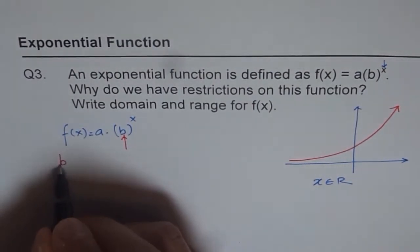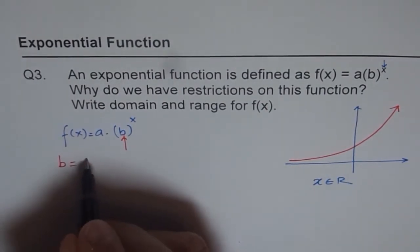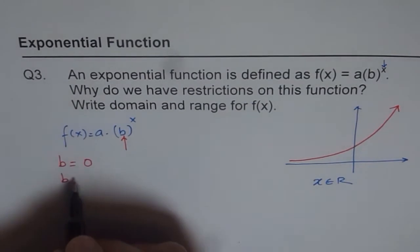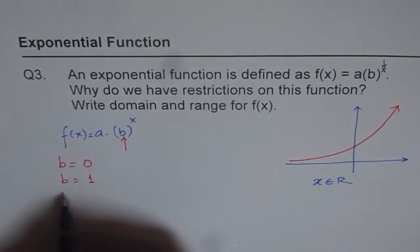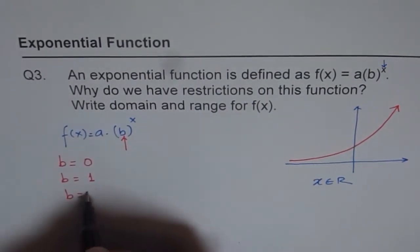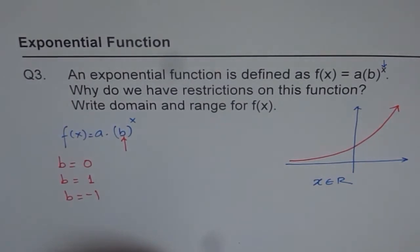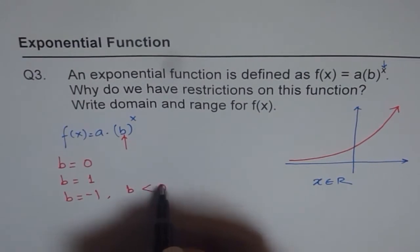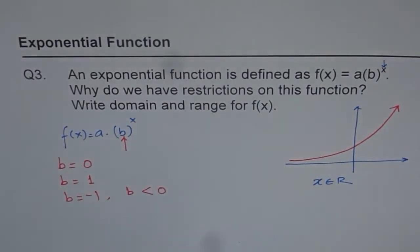If you take b as equal to 0, then what do you get? If you take b as equal to 1, then what do you get? If you take b as equal to minus 1, then what will you get? Rather, if b is negative, if b is less than 0, then what will you get? These are the things which will lead to restrictions.